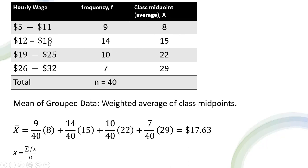The class midpoint for the second group here, the class goes from $12 to $18. So the midpoint is 15, or just the average: 12 plus 18 is 30, divided by 2 is 15. Again, we get the class midpoint or average here for each class.